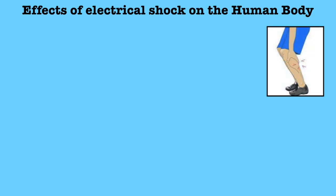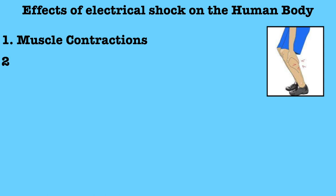When a person experiences electrical shock, several immediate and long-term effects can occur. The first effect is muscle contraction — electrical current can cause involuntary muscle contraction which can lead to the person being unable to release their grip on the electrical source. Another effect is pain and burns — electrical shock can cause severe pain at the point of contact, and electrical current passing through the body can generate heat, potentially resulting in burns at both entry and exit points.